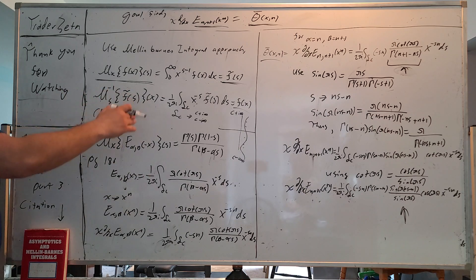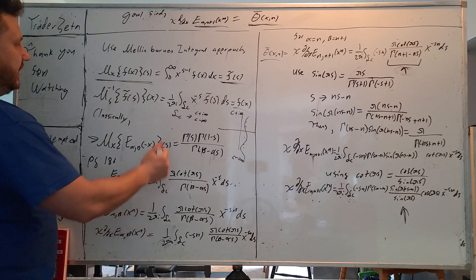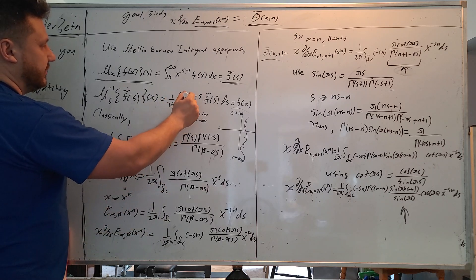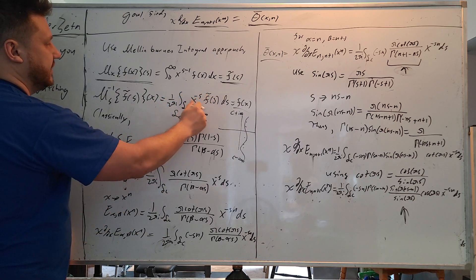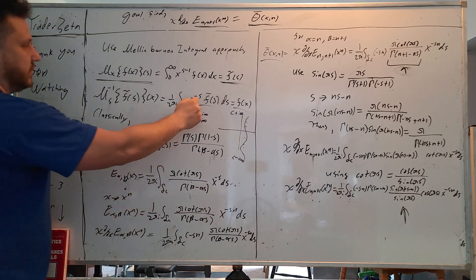Say for example you want to do it the other way and get f of x. You can do the inverse Mellon transform using this complex line integral: 1 divided by 2 pi i, complex line integral, x to the minus s, the transformed function, ds, giving you f of x.